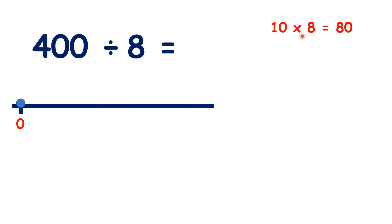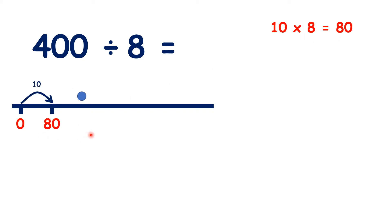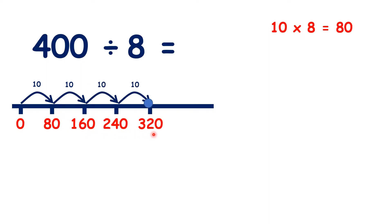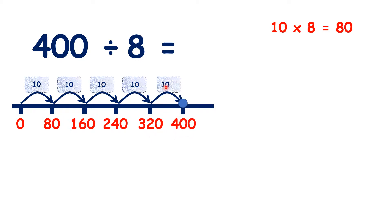But we do know that 10 times 8 is 80. So if we count up in steps of 10 times 8, we have 80, 160, 240, 320, and 400. So because we counted 5 steps of 10 times 8, we really counted 50 steps.